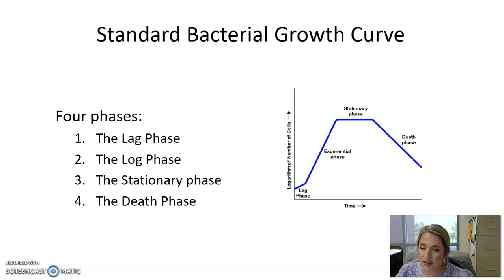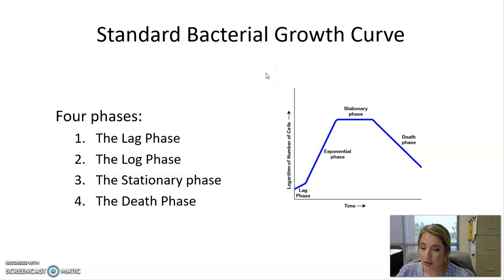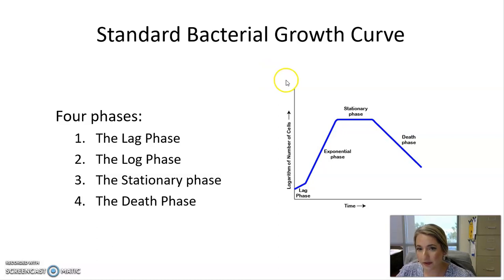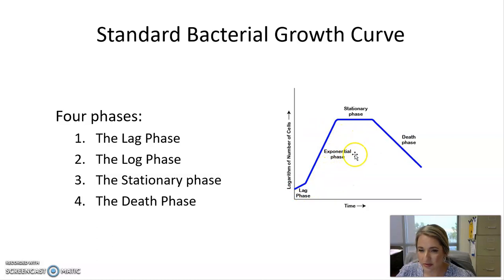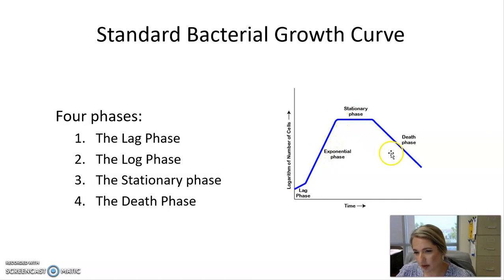The next topic is the standard bacterial growth curve. In the environment, bacteria have unlimited access to nutrients and will essentially grow for extended periods, but in a petri dish there are only so many nutrients. So in a petri dish, bacteria go through different phases, observed as the standard bacterial growth curve — number of cells over time. There are four phases: lag phase, log phase (also called exponential), stationary, and death phase. Bacterial cells grow rapidly, then level off, then start to die when in a petri dish.